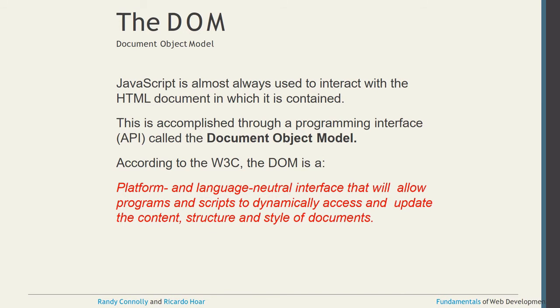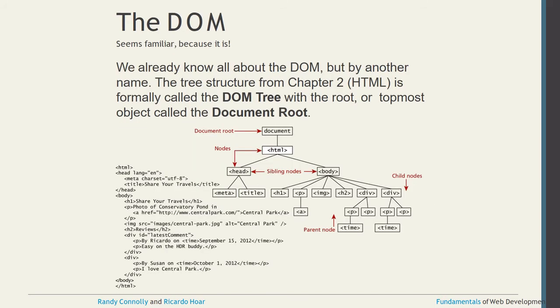JavaScript is almost always used to interact with the HTML document it is contained in. This interaction is done through a programming interface called the Document Object Model, or DOM. According to the W3C, the DOM is a platform and language-neutral interface that allows programs and scripts to dynamically access and update the content, structure, and style of documents.